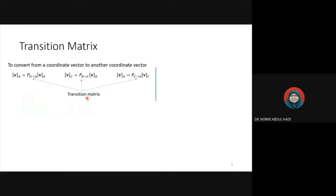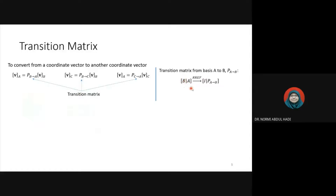So how do we calculate the transition matrix? For example, we want to find the transition matrix from basis A to B, written as PA to B. In the formulation, the left-hand side is the vectors in B and the right-hand side is the vectors in A. This calculation is similar to finding an inverse matrix — you write vectors in B on the left and vectors in A on the right, then reduce matrix B into an identity matrix. Matrix A follows the row operations of B, and the resulting right-hand side is the transition matrix from A to B.